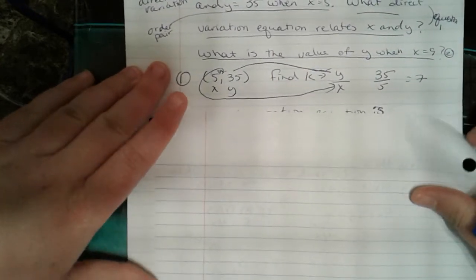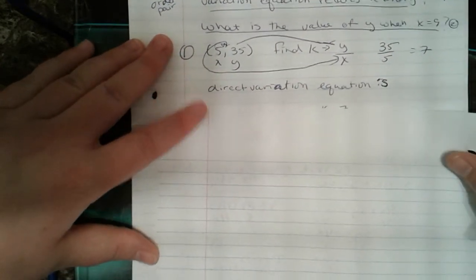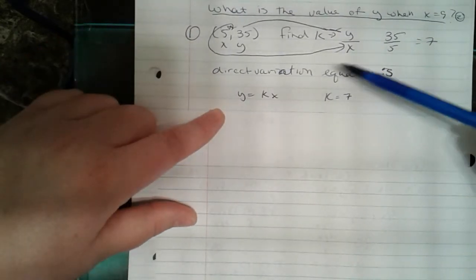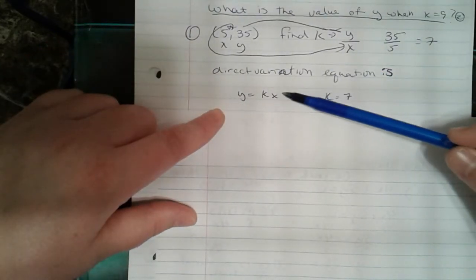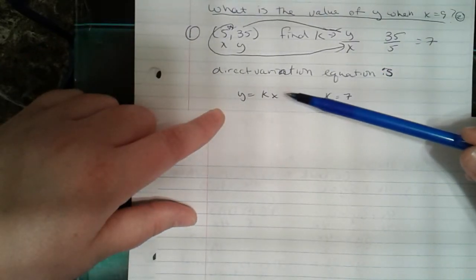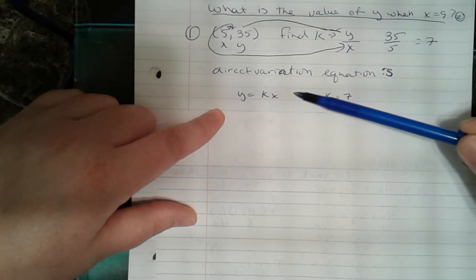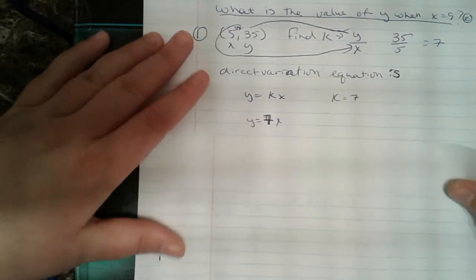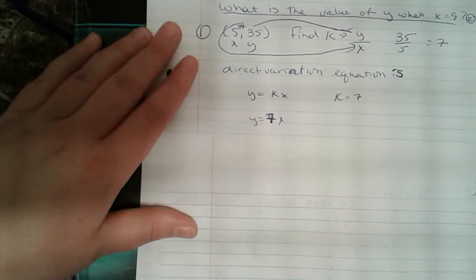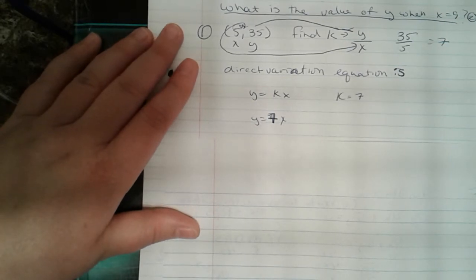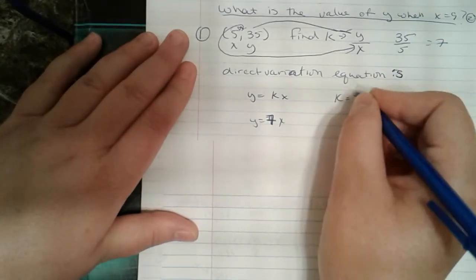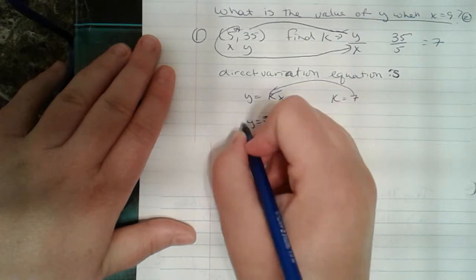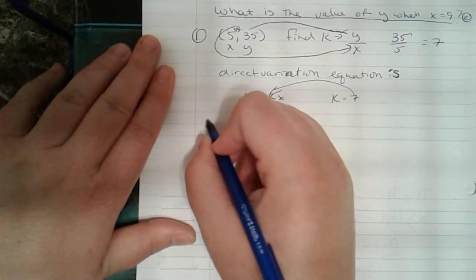My next step is to write the equation. Our direct variation equation is y equals kx. We know that k is 7, so I can just plug in 7 for k, giving us y equals 7x. This covers question 1.